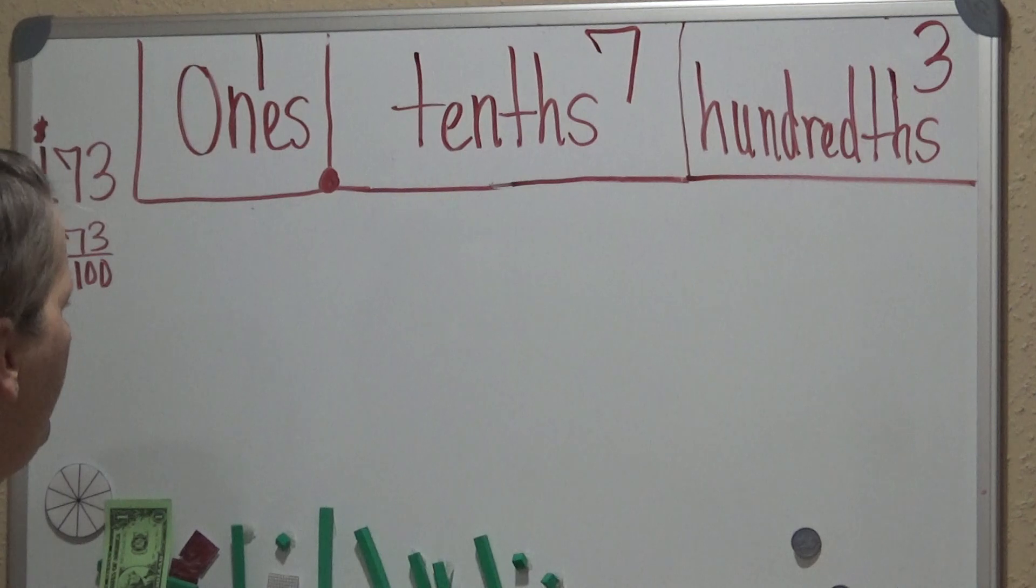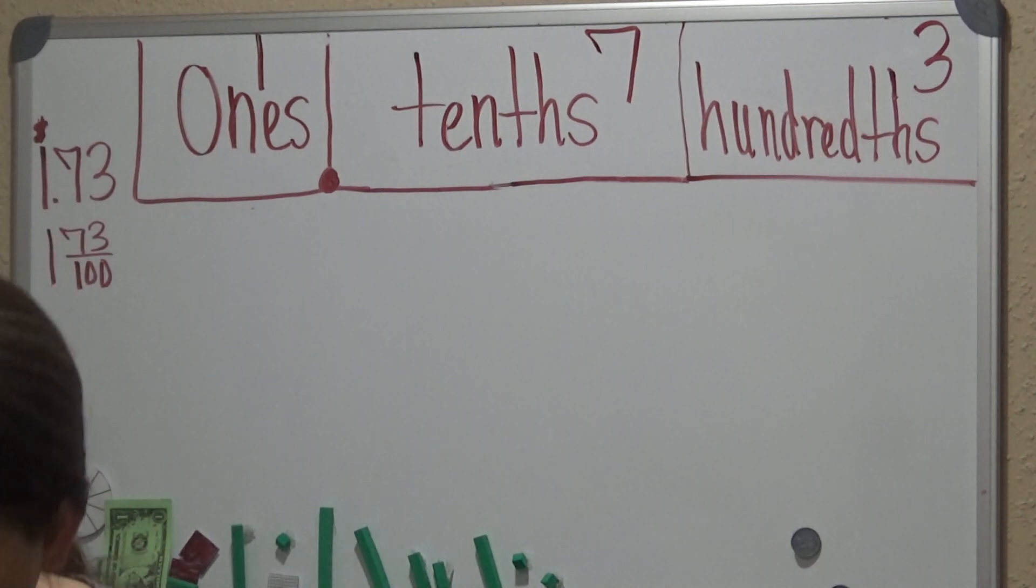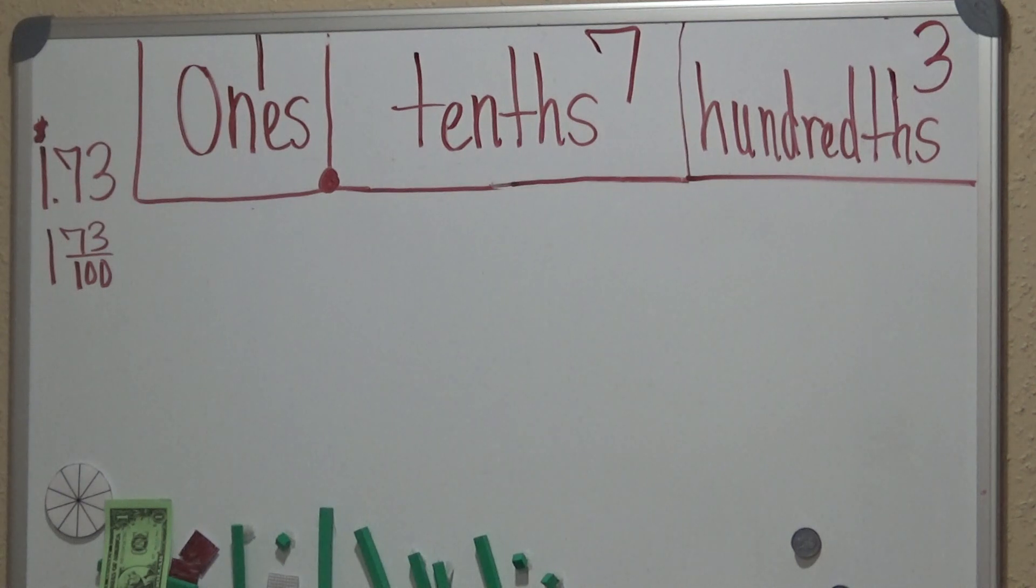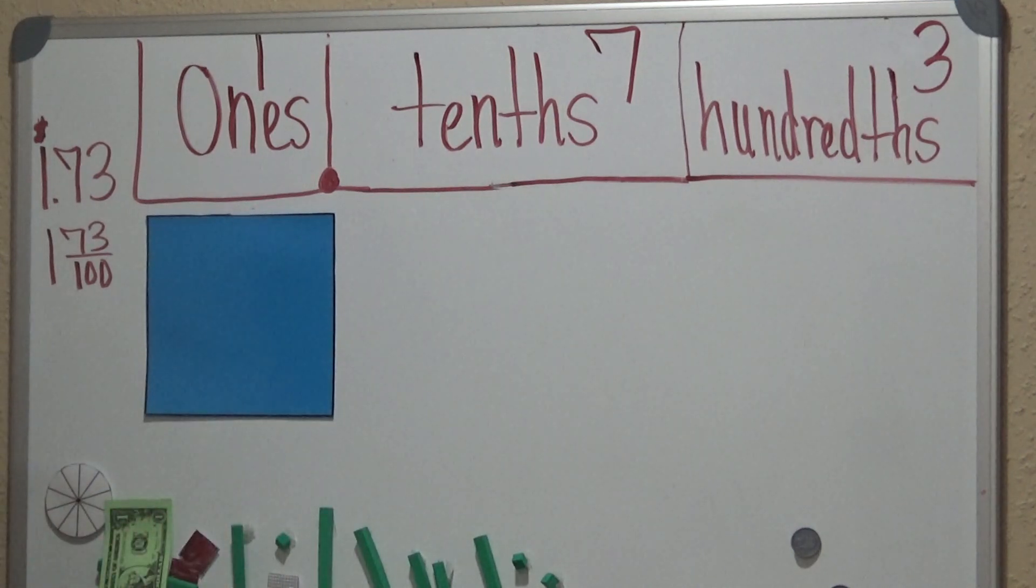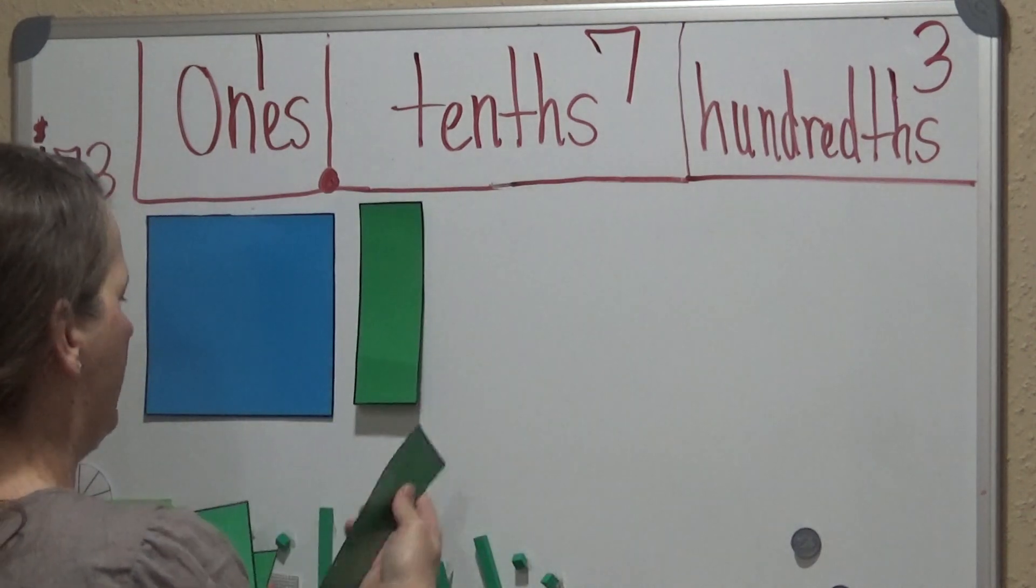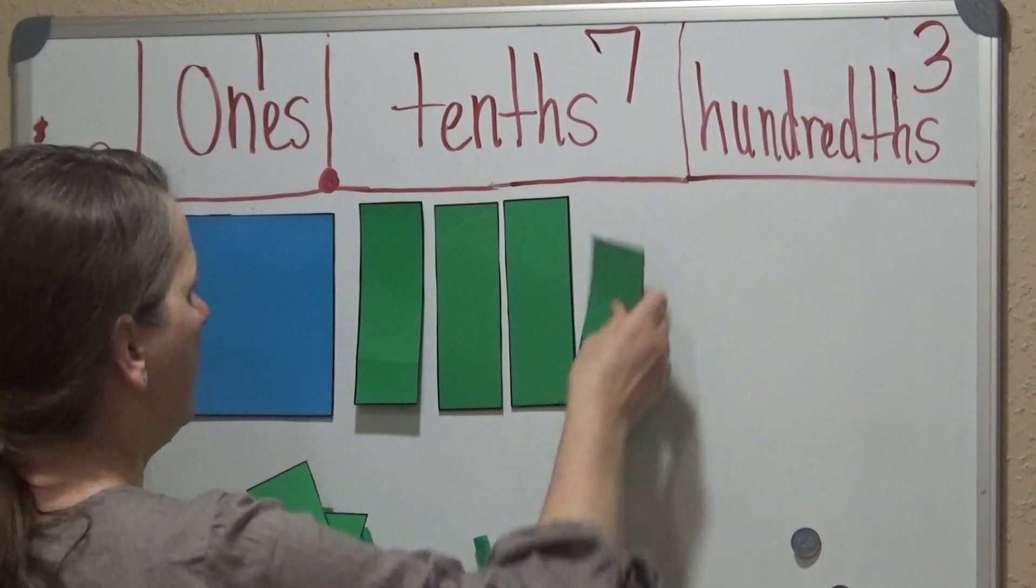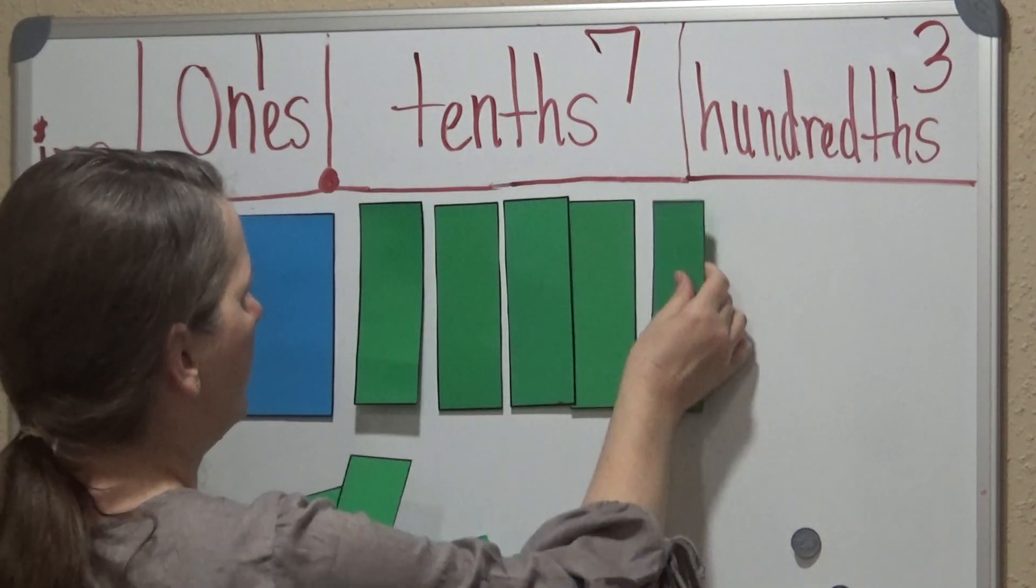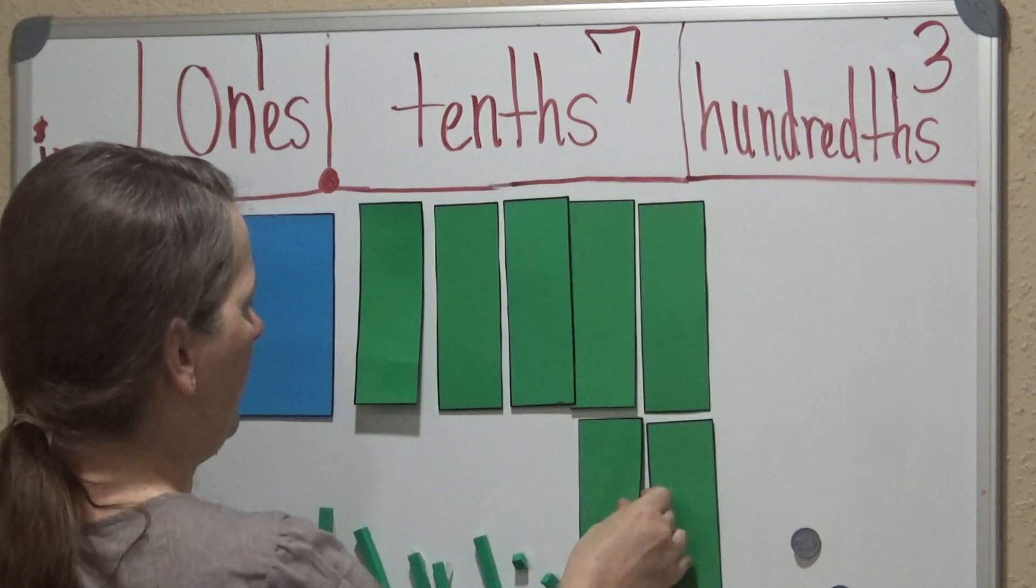The first thing I'd like to do is show the model of what that would look like. We have 100 pennies out of 100 pennies, which gives us $1. We have 7 dimes: 1, 2, 3, 4, 5, 6, 7.